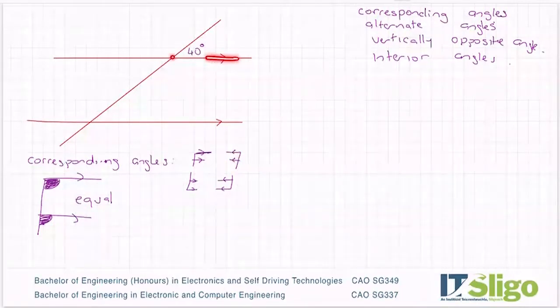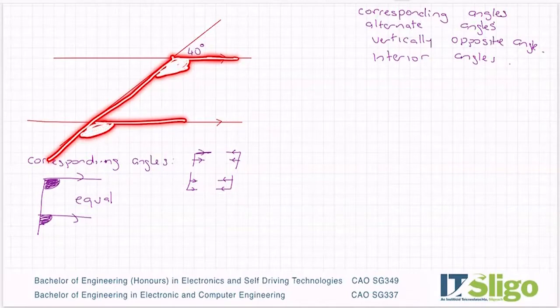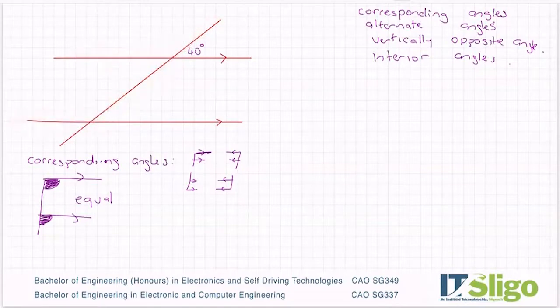So if I go back to the F that I drew there, it's this angle here that corresponds to this angle here. In a similar way, I could draw an F over this side. Do you see they're all my parallel lines? And it's the angles under the arms of the F's that are equal.